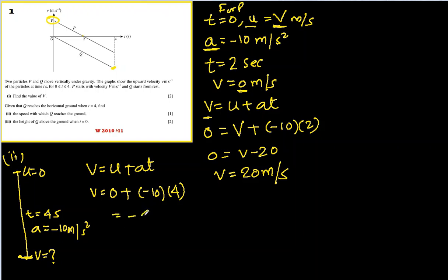So it comes out to be minus 40 meters per second. If you don't want to write minus because they are asking speed, not velocity, you can just write 40 meters per second.